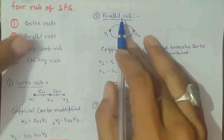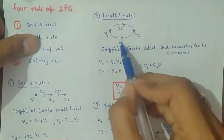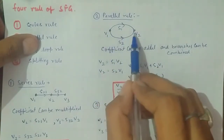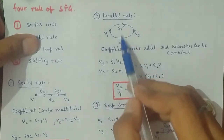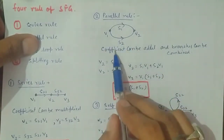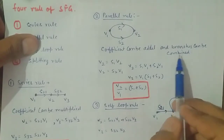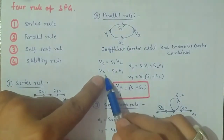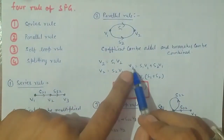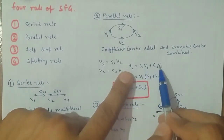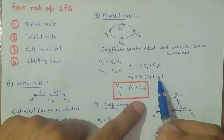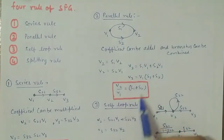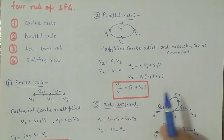The second rule is the parallel rule. When two branches run in parallel between nodes V1 and V2, their coefficients can be added. V2 equals S1 times V1, and also V2 equals S2 times V1. So V2 equals (S1 + S2) times V1, and the ratio V2 over V1 equals S1 plus S2. Whenever we have two branches in parallel, we apply this rule to find the relation between the two parameters.